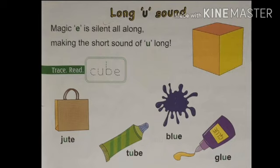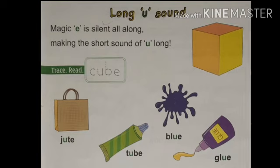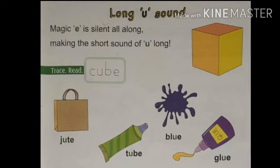Another word is J-U-T-E, jute. Jute क्या होता है? यह एक crop है. And it is used to make bags, sacks and all. यह एक फसल है — जूट का हम लोग bag बनाते हैं, बोरा वगैरा बनाते हैं. इसी चीज में जूट use होता है. Understood?